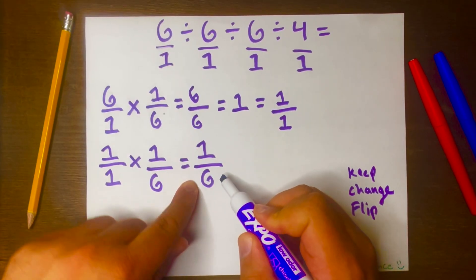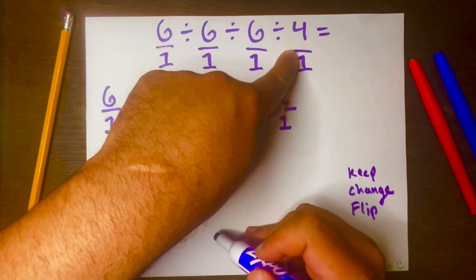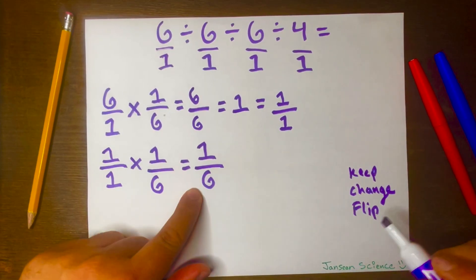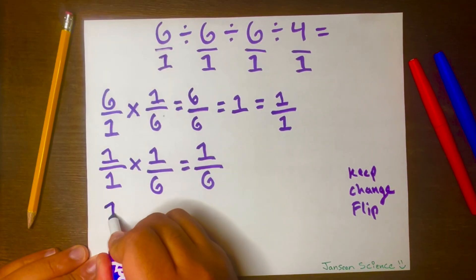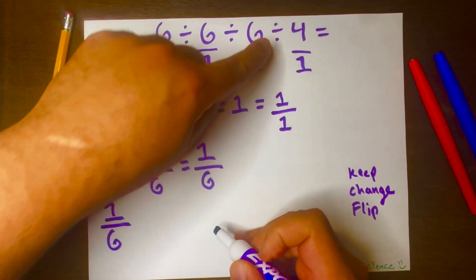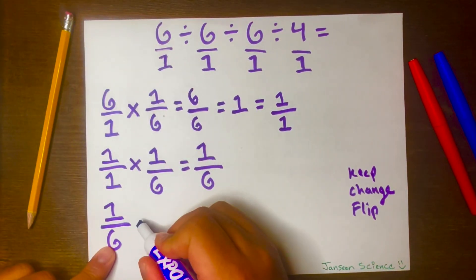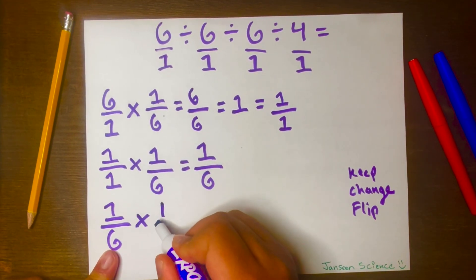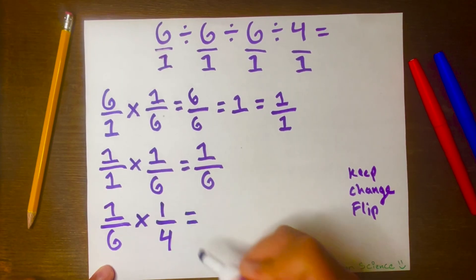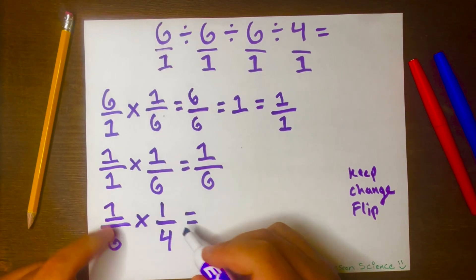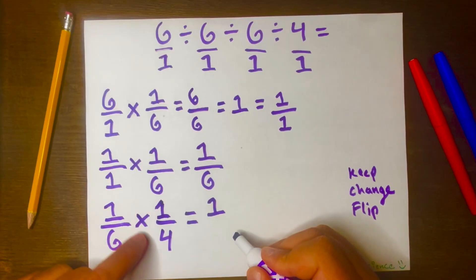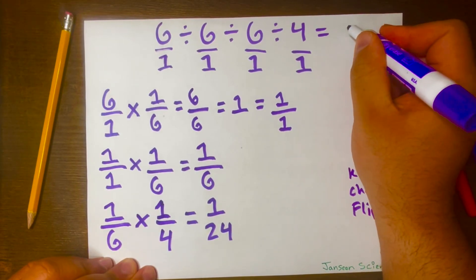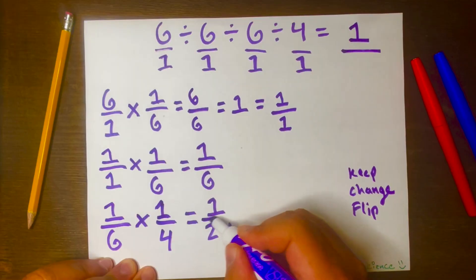Now we're going to use this part — 1 over 6 — and divide it by the last part of the problem, 4 over 1. We'll use the keep-change-flip method again: keep 1 over 6, change the operation from division to multiplication, and flip 4 over 1 to get 1 over 4. Multiplying across: 1 times 1 equals 1, and 6 times 4 equals 24. So the answer is 1 over 24.